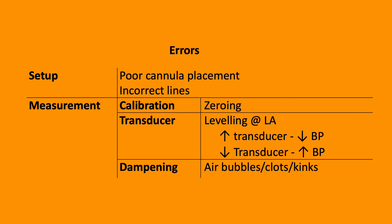A range of factors can affect the blood pressure reading. First, setup — poor cannula placement and incorrect line use. Second, measurement and calibration — inadequate zeroing, which exposes the transducer to atmospheric pressure and calibrates the pressure to zero. Third, transducer height — if too high, this results in a low blood pressure reading; conversely, a low transducer results in a high blood pressure reading. Finally, dampening due to air bubbles, clots, or kinks can affect the blood pressure reading.